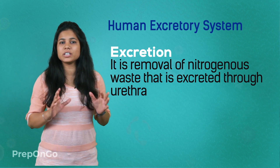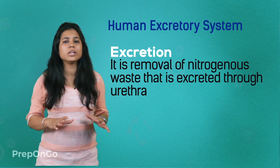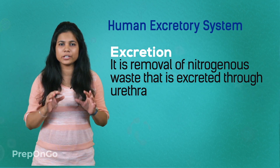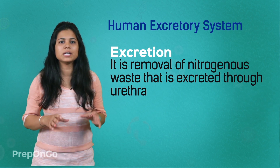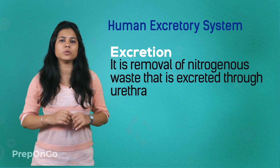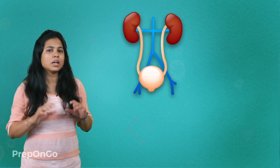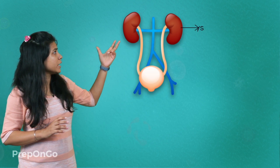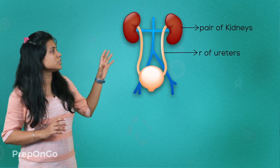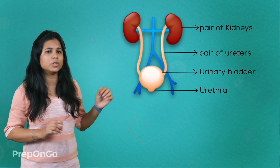When I say excretory system in humans, it only means the removal of nitrogenous waste that is excreted through the urethra. But before the waste is excreted through the urethra, it passes three other organs also. So we can say that the excretory system includes four organs in all: a pair of kidneys, a pair of ureters, a urinary bladder, and the urethra.